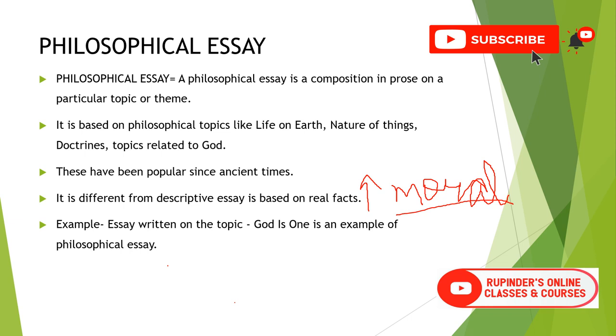For example, essay written on the topic God is one is an example of philosophical essay. Here facts are different, there are different descriptions, but the ultimate topic is that you call Bhagwan with any name, you worship Bhagwan in any form, ultimately what is Bhagwan, that is somebody who is supreme, somebody who is watching us, somebody who is the ultimate moral support for all of us. In philosophical essay we talk about philosophy which is more realistic, according to me it is more realistic than the realistic things.